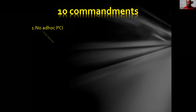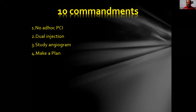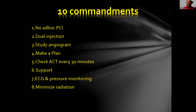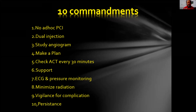The 10 commandments for doing retrograde CTO: one — no ad hoc PCI; two — dual injection; three — study the angiogram properly, spend at least half an hour to make a plan — Plan A, Plan B, Plan C; four — check ACT every 30 minutes to prevent thrombosis; five — sometimes you need hemodynamic support if EF is low; six — ECG and pressure monitoring; seven — keep an eye on the field; eight — minimize radiation; nine — vigilance for complications, predict them; ten — persistence.